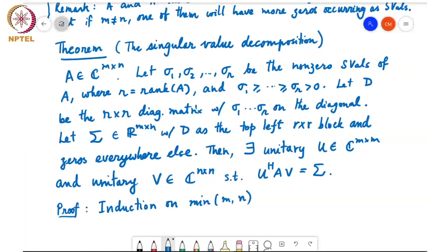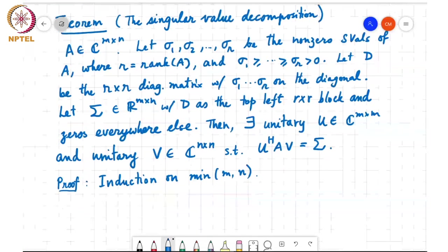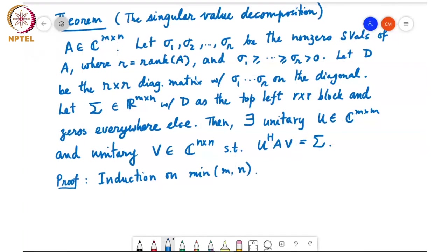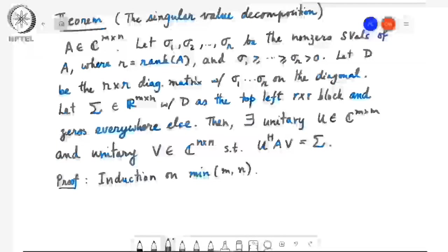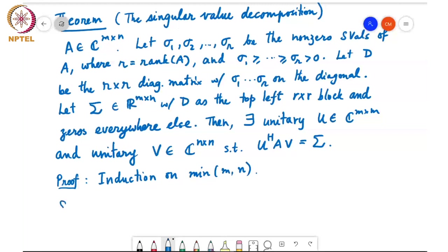We do induction on the minimum of M and N. The first step is to show the base case: the result holds when min(M, N) equals 1.